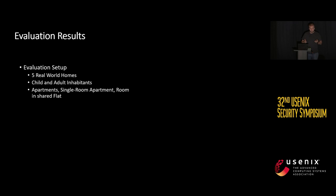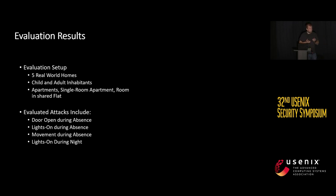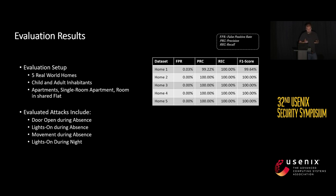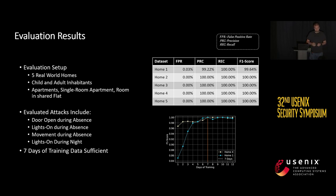For the evaluation, we collected data from five real-world homes representing a diverse setup with different living situations, and created attack data — for example, opening the door while the user is not at home, or observing malicious states such as movement occurring when the user is absent. As you can see, for four out of five smart homes we achieved an F1 score of at least 100%, and for the last home we achieved an F1 score of 99.64%, which is still quite high. We also evaluated how many days of training data are needed, and seven days of training data are already sufficient to achieve this performance.